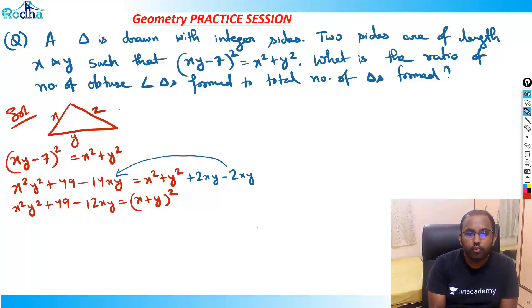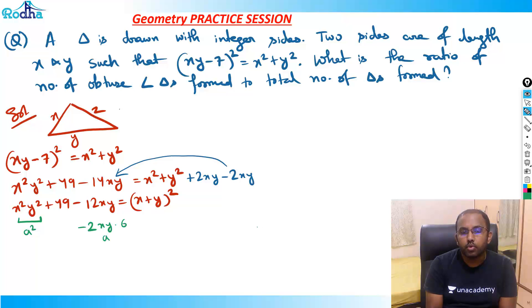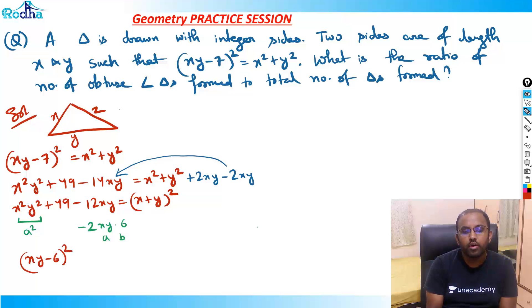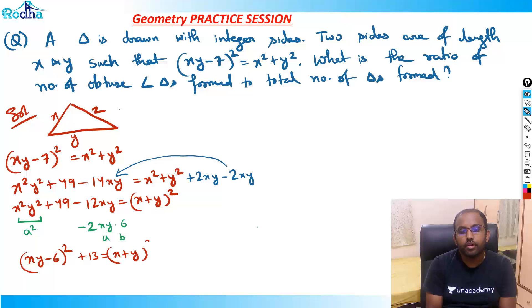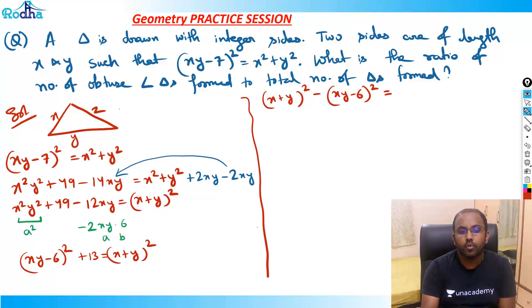Similarly, I can also change the left side into the form of (XY - something)² — a perfect square. So (X - 6)² would use 36, leaving plus 13 outside. This gives us: (X + Y)² - (XY - 6)² = 13.